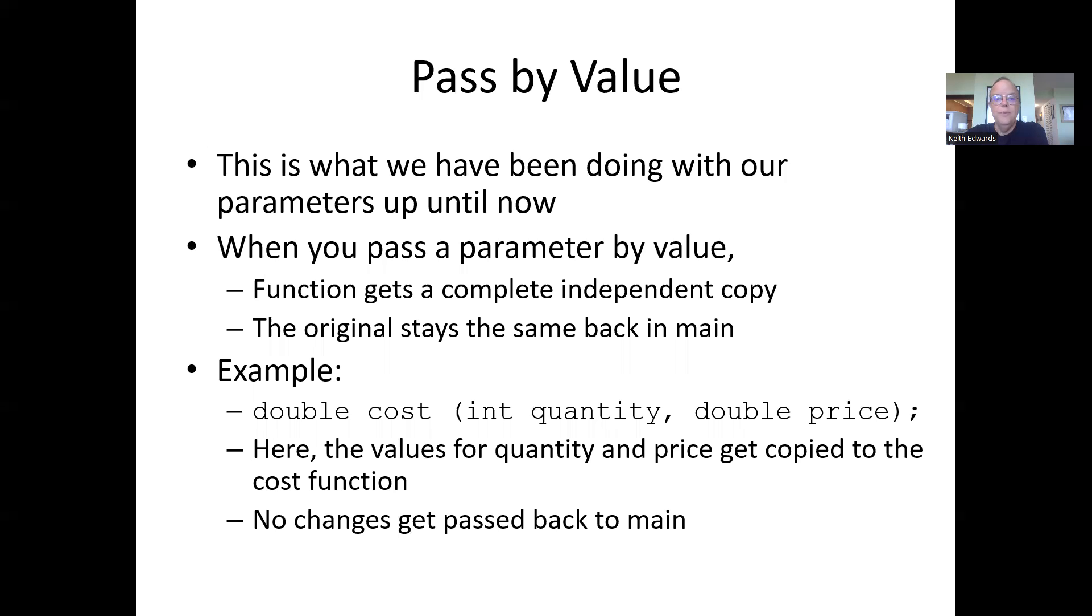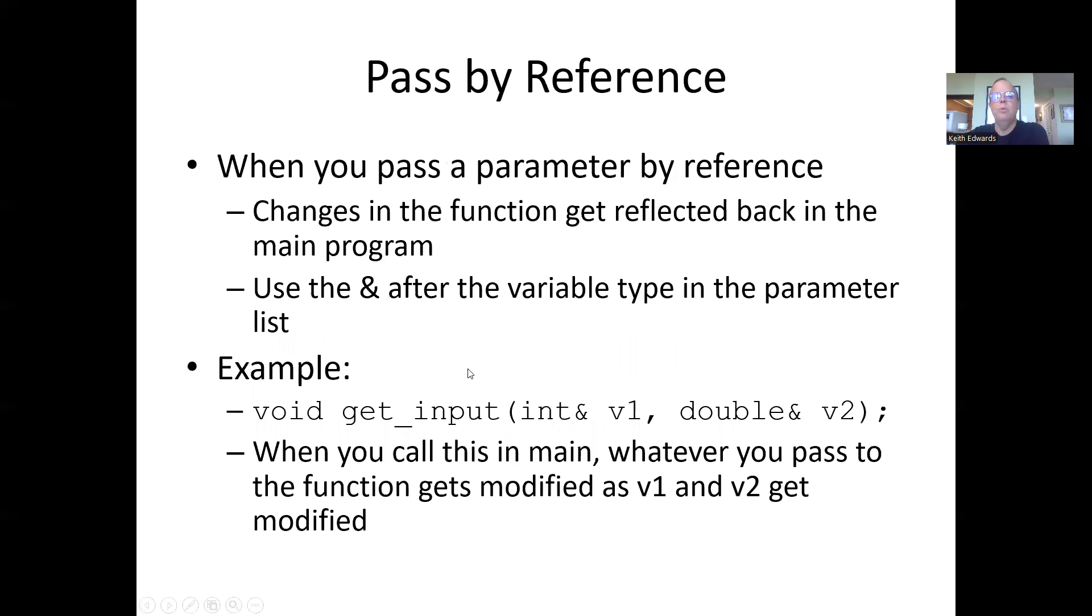For example, with our cost function from the previous lecture, it would get quantity and price, and those values would get copied into cost. They would be independent, so if we modified them inside of cost, there wouldn't be any changes to them back in main. But say we wanted to modify them—then we could do pass by reference.